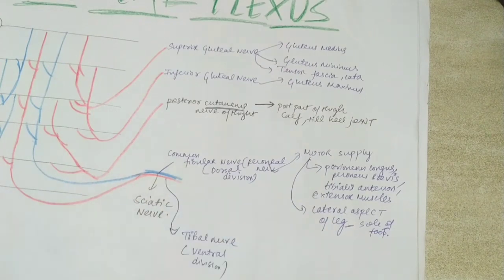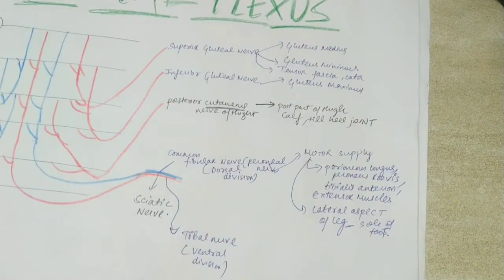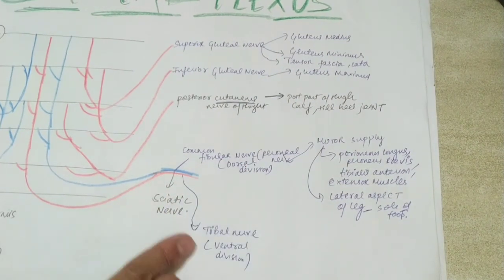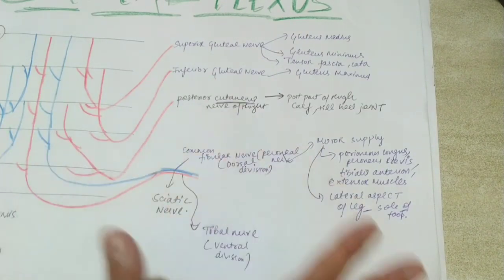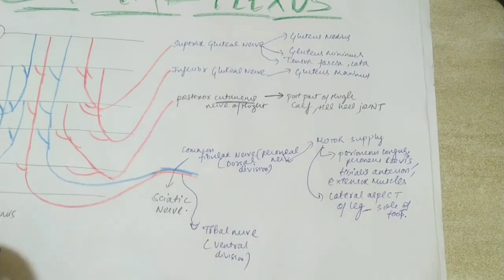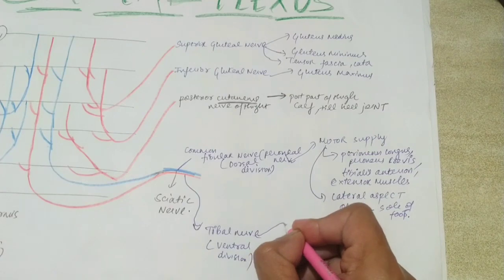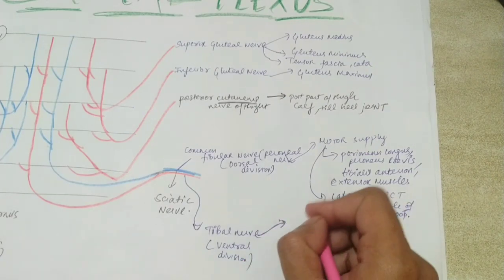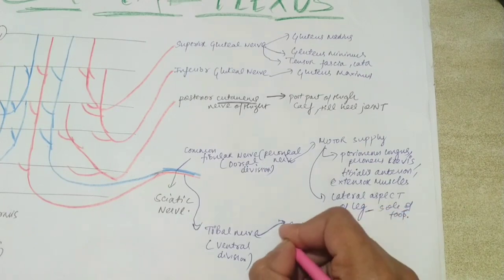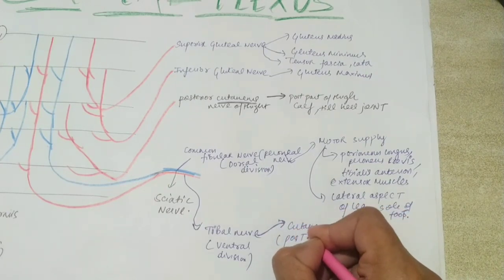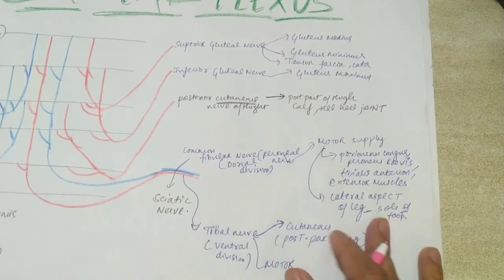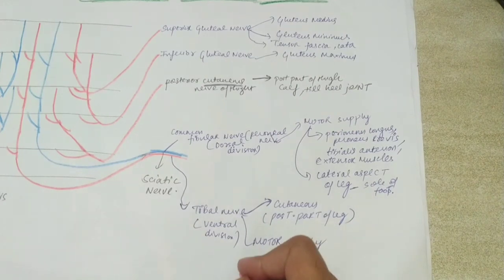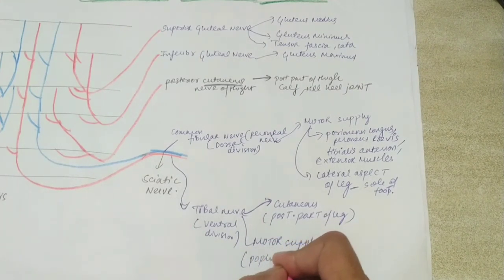The sciatic nerve typically divides at the popliteal fossa, sometimes above the gluteal region, into the tibial nerve posteriorly and the common fibular nerve laterally. The tibial nerve gives cutaneous supply to the posterior part of the leg, and its motor supply includes the popliteus muscle.